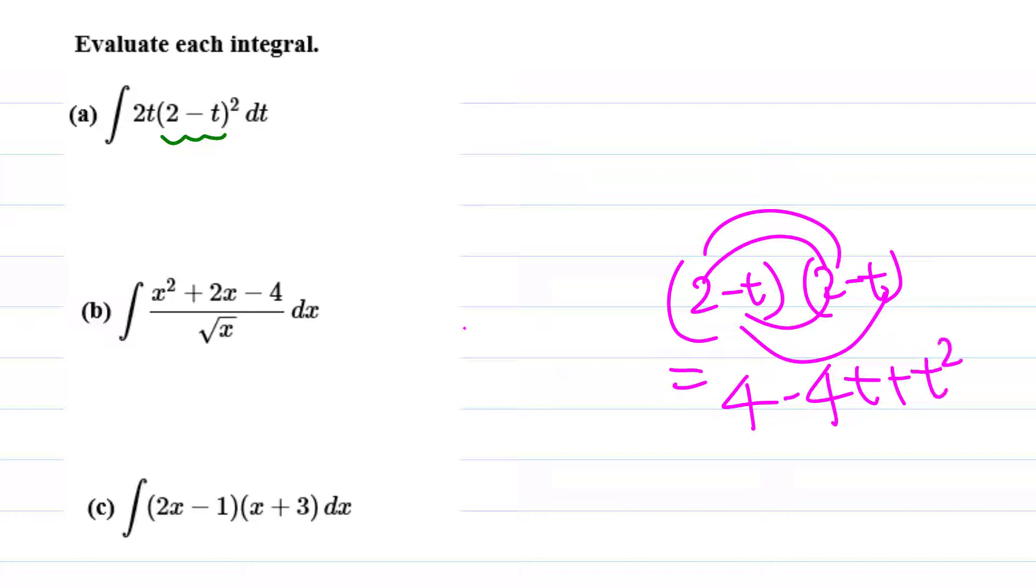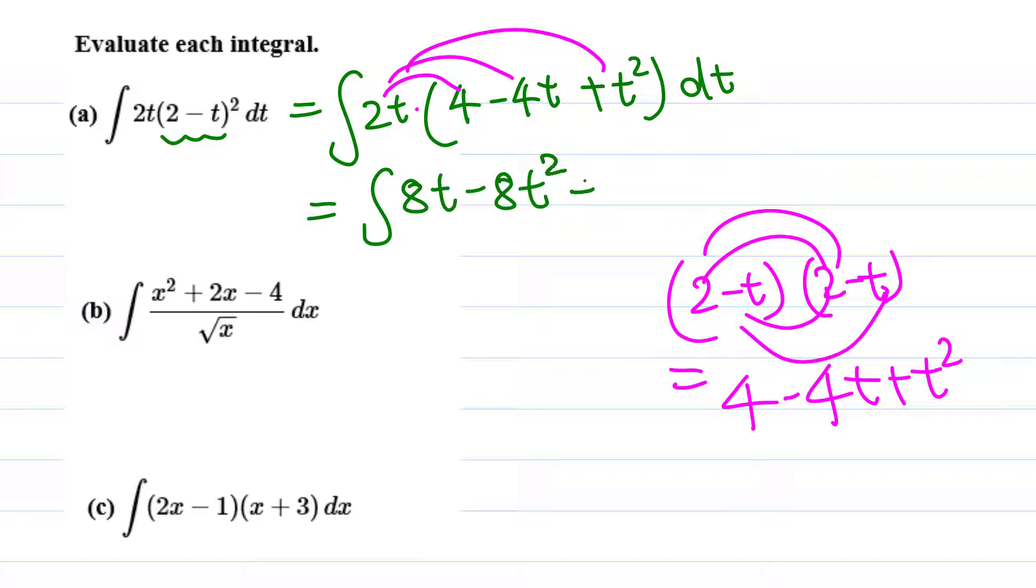We can distribute 2t, so let me rewrite this as 2t times (4 minus 4t plus t²). We still have a product, but now we can distribute. This is in fact 8t minus 8t² plus 2t³.